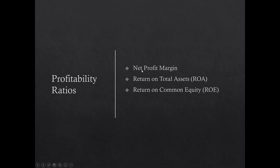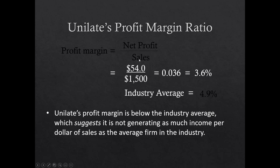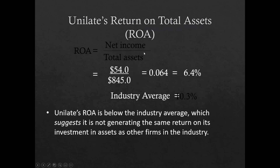The three profitability ratios are net profit margin, return on assets (ROA), and return on common equity (ROE). Net profit margin = net income / sales: $54M / $1.5B = 3.6%; industry average is 4.9%. ROA = net income / total assets: $54M / $845M = 6.4%; industry average is 10.3%. Both are below industry average — Unilate is not generating as much income per dollar of sales or per dollar of assets as the average firm.